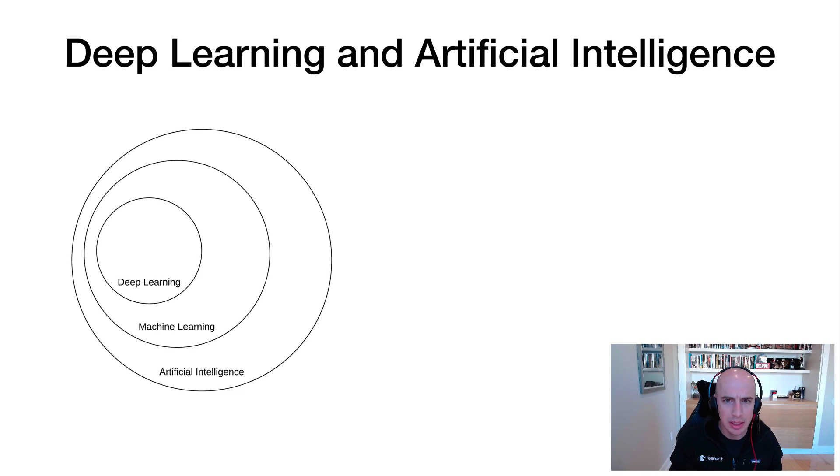So to start, deep learning and artificial intelligence, what's the relationship between the two? Well, machine learning is a subfield of artificial intelligence, and deep learning is a subfield of machine learning.